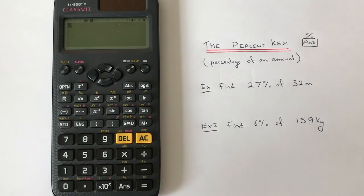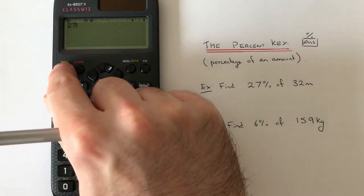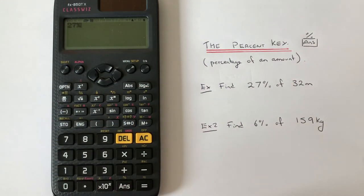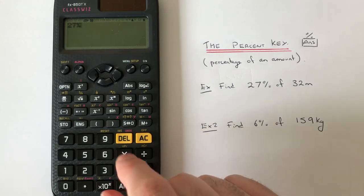Let's have a look at the two examples here. I've got to work out 27% of 32 meters. We type in 27, Shift, Ans, and we don't have an 'of' key on the calculator, so we type in...